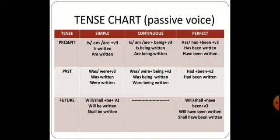For simple future tense, in active form we use will/shall plus verb's first form, and in passive we use will/shall plus be plus verb's third form — so it will be 'will be written' or 'shall be written.' We do not have future continuous tense for passive voice. For future perfect tense, we use will/shall plus have plus been plus verb's third form — so it will be 'will have been written' or 'shall have been written.'